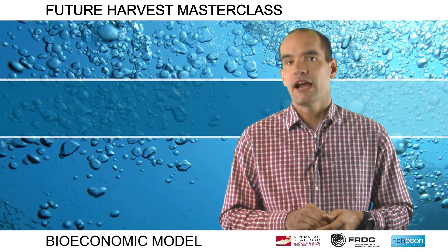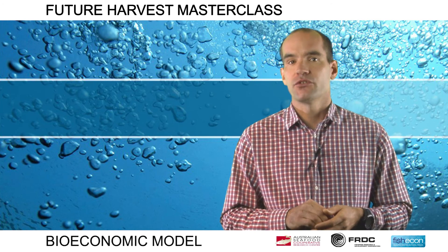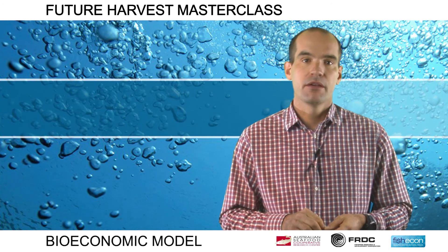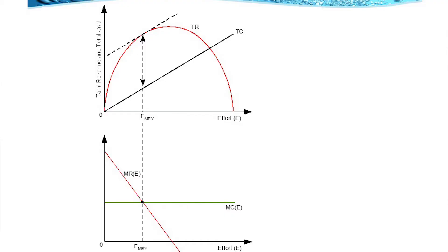Recall from Module 1 how we emphasised the role of marginal thinking. The graph shows the same problem in terms of the marginal benefit and marginal cost of increasing effort in the fishery. The economically efficient effort level is where the marginal benefit of additional effort is equal to the marginal cost of additional effort.